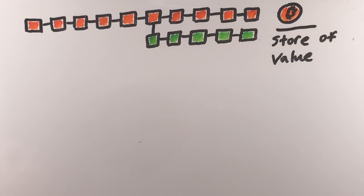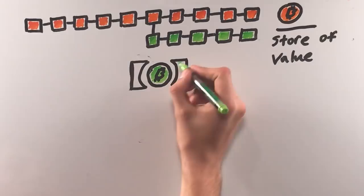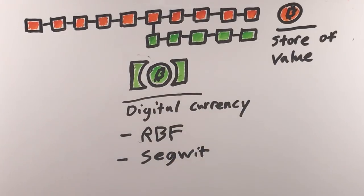So the Bitcoin community split, and a hard fork initiated for those who wanted to use Bitcoin as a currency. The Bitcoin Cash hard fork removed Replace by Fee and implements regular block size increases so it can use zero-conf again.